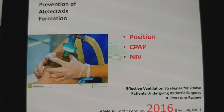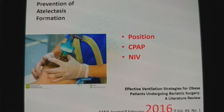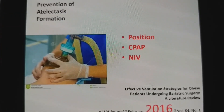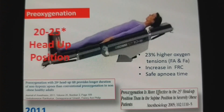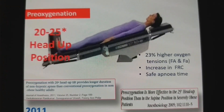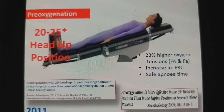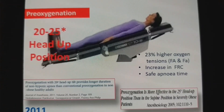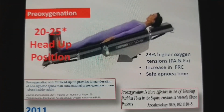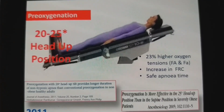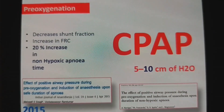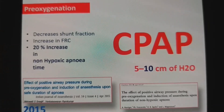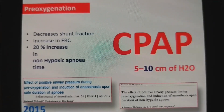How to prevent atelectasis formation? This can be done by three ways: head-up positioning, application of CPAP, and pre-oxygenation with NIV. If there are no contraindications, induce the patient after pre-oxygenation in a head-up position with improved FRC, which results in higher alveolar oxygen tension. Application of 5–10 cmH2O CPAP during pre-oxygenation also prevents atelectasis formation.